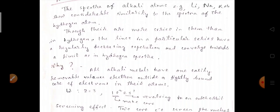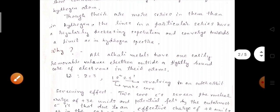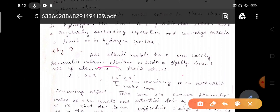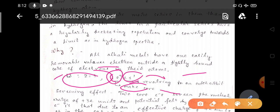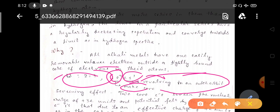Why is it similar? Because all the alkali metals have one easily removable valence electron outside a tightly bound core of electrons in their atoms just like lithium, the example that is 1s2, 2s1. 1s2 will make the core and 2s1 that is the most outer electron and it will be revolving in an outer orbit.